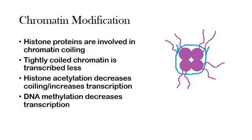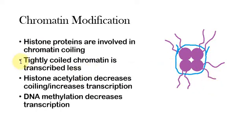First off, we have chromatin modification. Chromatin is basically the stuff found in your nucleus — it's made up of DNA and various proteins, a diffuse mass of mostly DNA. Histone proteins are the ones involved in coiling up chromatin and making it tight enough to fit into your nucleus. Tightly coiled chromatin is actually transcribed much less than loose chromatin, because RNA polymerase and other proteins involved can access the DNA more when it's loose than when it's tightly coiled.